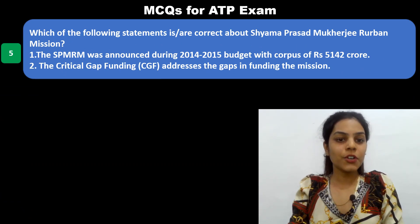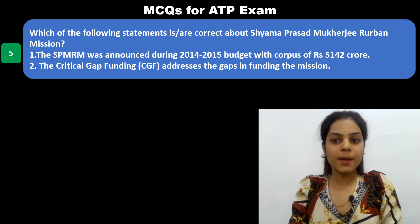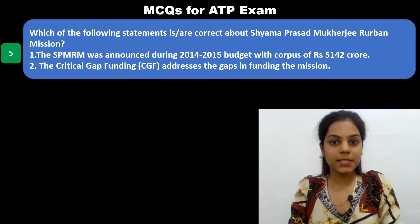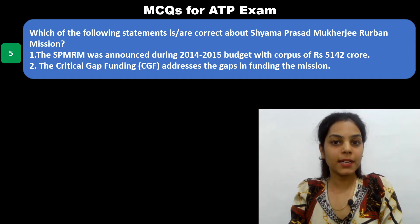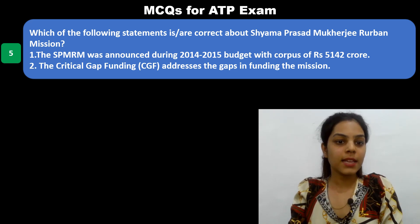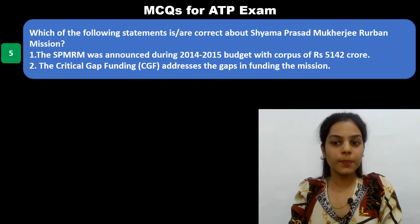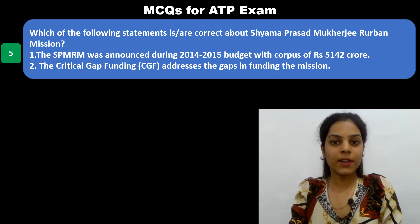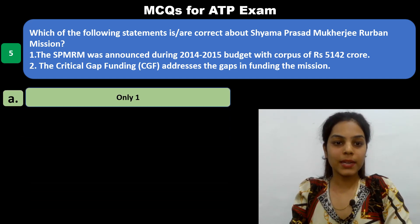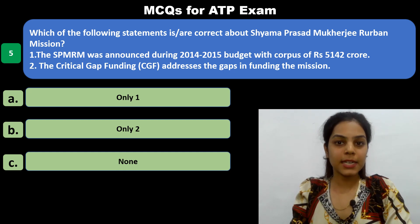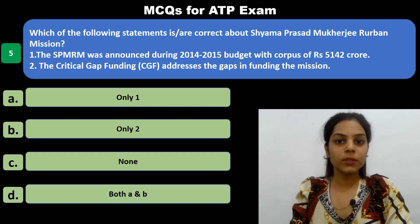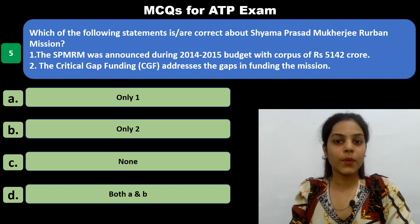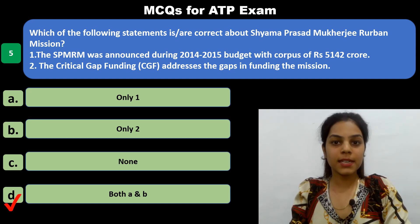The next question: Which of the following statements is or are correct about Shama Prasad Mukherjee Re-Urban Mission? Statement one: SPMRM was announced during the 2014–2015 budget with a corpus of Rs. 5142 crores. Statement two: The critical gap funding addresses the gaps in funding the mission. Options: only one correct, only two correct, none correct, or both A and B correct. The answer is both A and B — both statements are correct.